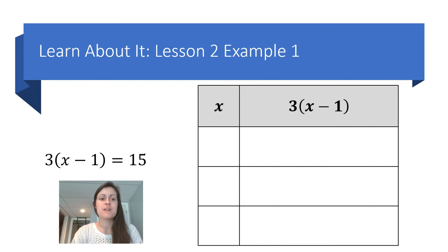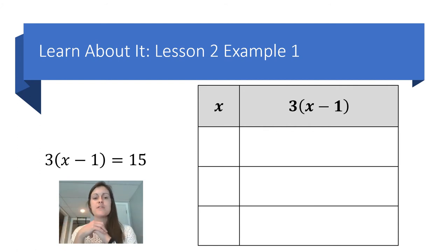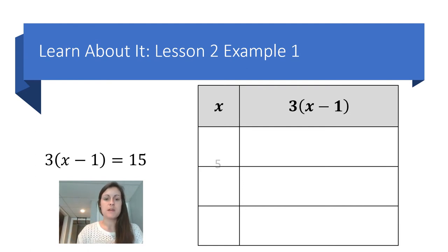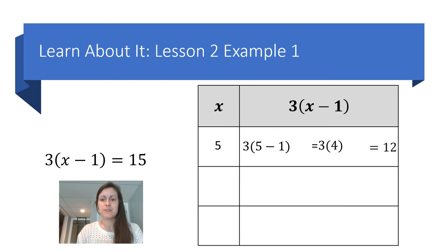Let's solve the equation 3 times the quantity x minus 1 equals 15 by using guess-and-check and organizing information into a table. This equation looks different from before because there are parentheses on the left-hand side and no variables on the right. I'll begin with the friendly number 5 and substitute into 3 times the quantity x minus 1. 5 minus 1 is 4, so I have 3 times 4, which is 12 — and I'm trying to get to 15. So x equals 5 is not a solution.